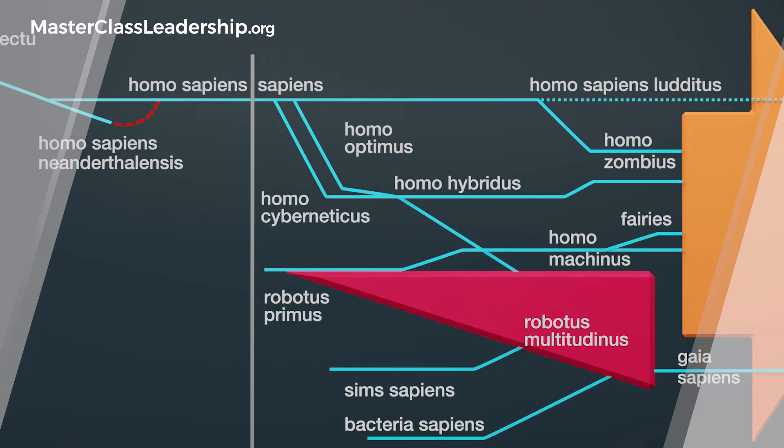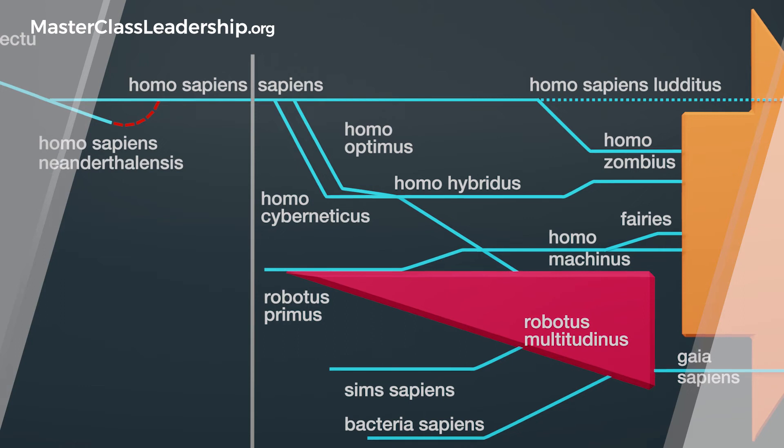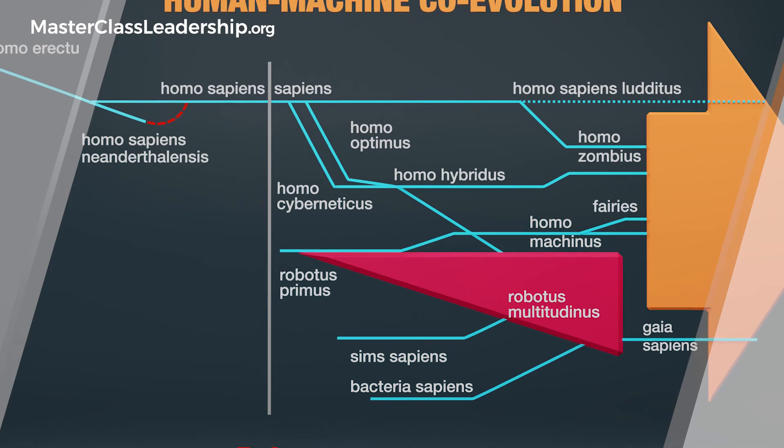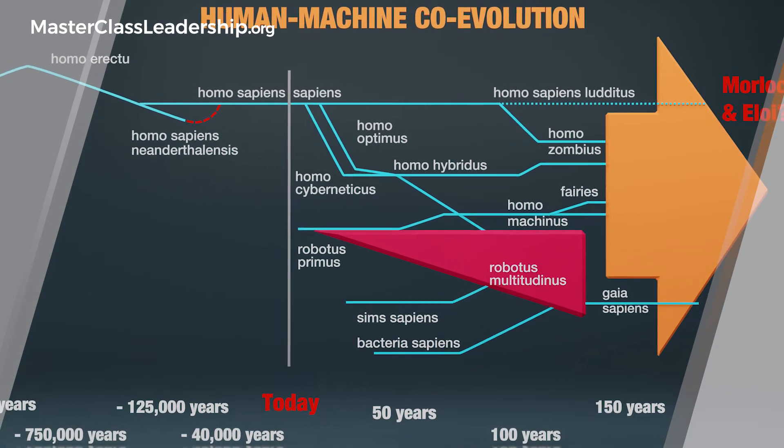And these things are all converging in the same timeline, and we will end up converging with that and forming homo machinus or homo roboticus if you want to call it that. Meanwhile ordinary people who aren't wanting to get the upgrades we could call those homo sapiens luditis where they're just staying as ordinary human beings and don't want to modify.